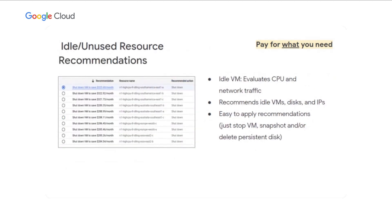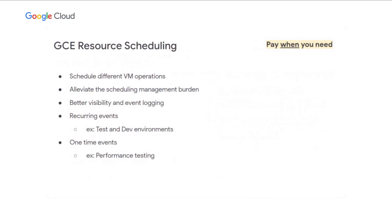Another type of recommendation is idle or unused resource recommendations. The engine identifies virtual machines that are unused — no CPU usage or almost no network traffic — along with any unused persistent disks and potential cost savings. If a VM is idle, you can use one click to shut it down. If a disk is empty and has not been connected to any VM for more than 14 days, it will recommend removing it, or it will first create a snapshot — which costs less than a persistent disk — so the operation is reversible.